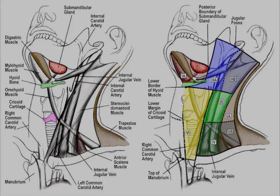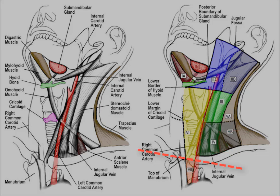Level 6 is located in the anterior neck inferior to the hyoid bone and anterior to the carotid arteries. Level 7 is separated from level 6 by the superior border of the manubrium of the sternum and is located between the right and left common carotid arteries.